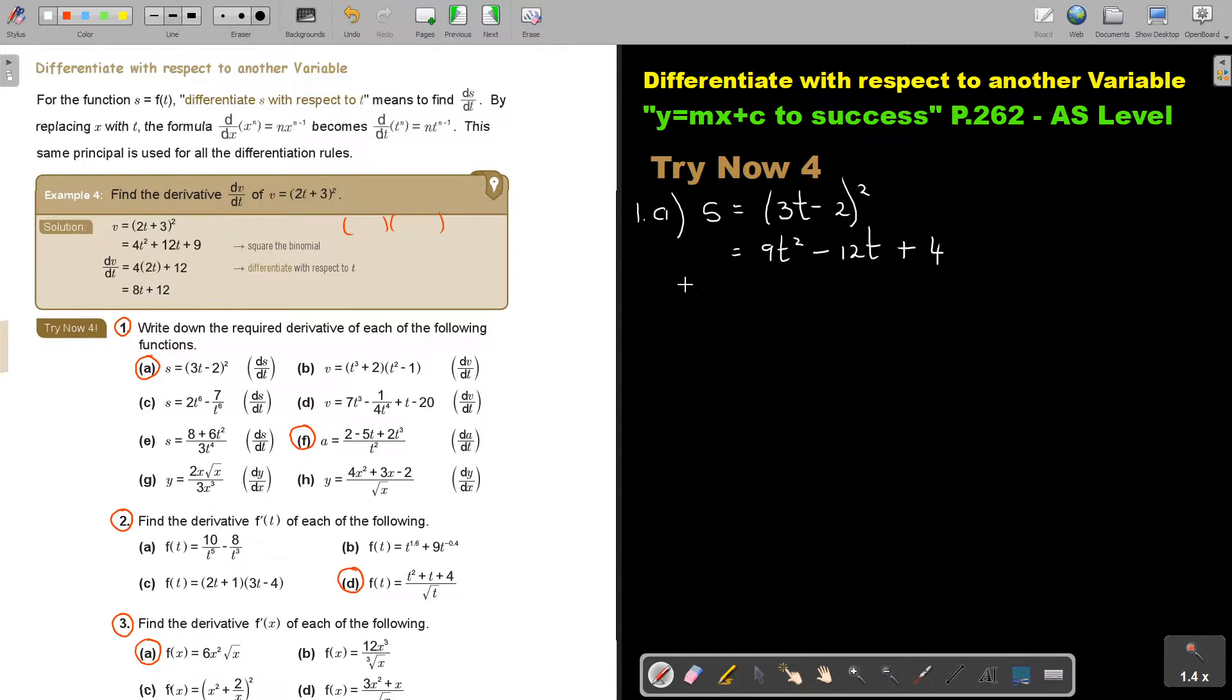Now I'm going to differentiate. So write, it's just that one on top, the s. This one, it's 2t at the bottom. And just differentiate. And then I'm getting 18t minus 12. And the constant is just falling away. Easy.